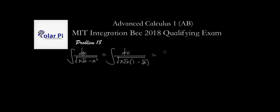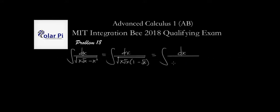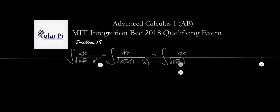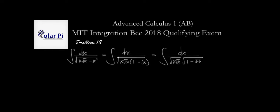So next we say that our given integral is the same as dx divided by square root of x·√x, and then square root of (1 minus √x). And now I'm going to rewrite that √x as the fourth root of x squared. Fourth root of x squared is equal to √x, and this again is x·√x.